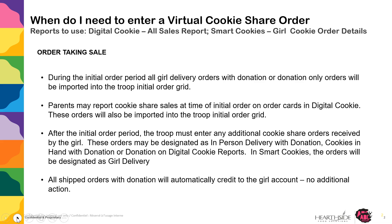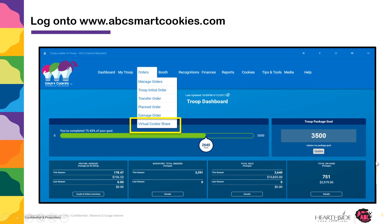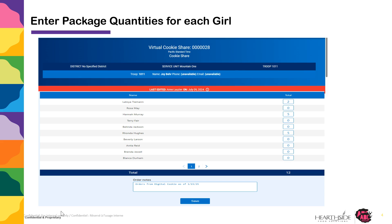So how do you enter a virtual cookie share order? First, you navigate into abcsmartcookies.com and go to Order Virtual Cookie Share. Once you click this link, you will get a grid of the girls in your troop. The unit of measure is always set in package quantities. Enter the girls' package quantities in the box as shown.